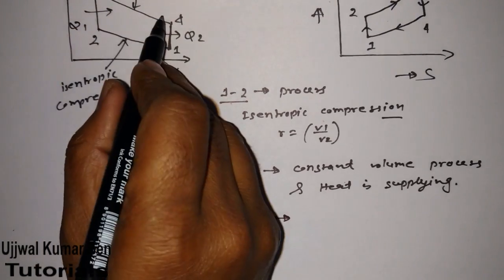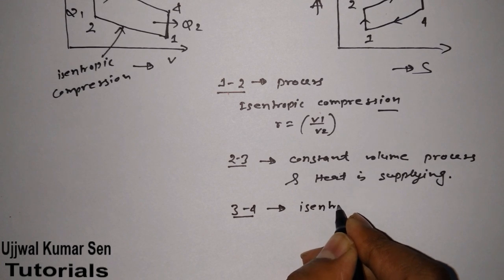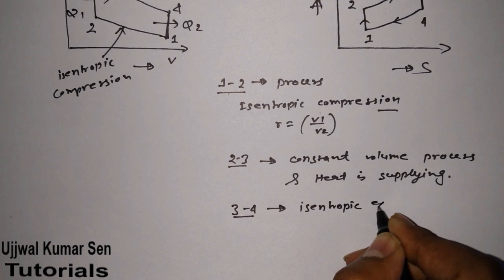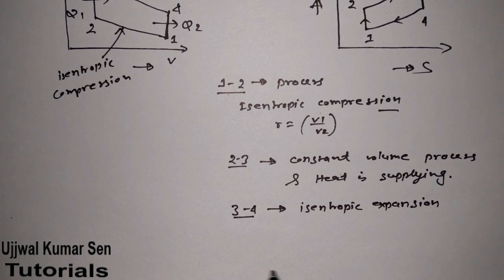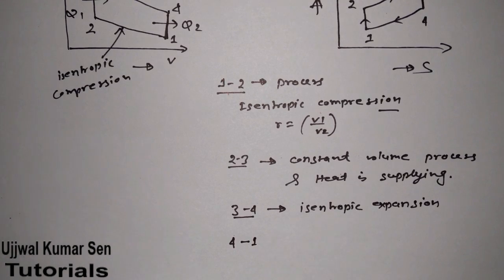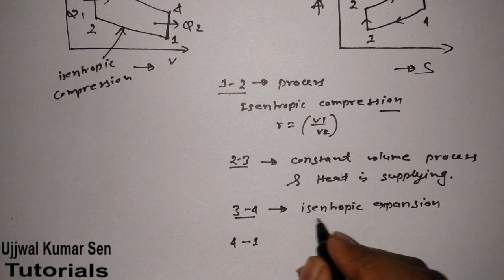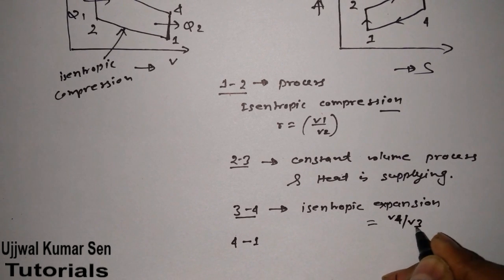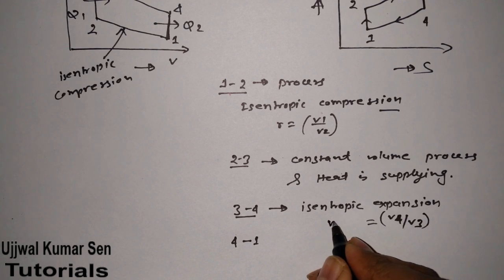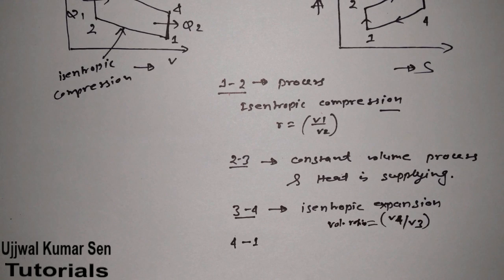For the 3 to 4 process, isentropic expansion is going on. In the case of isentropic expansion, the volume ratio is v4 by v3.